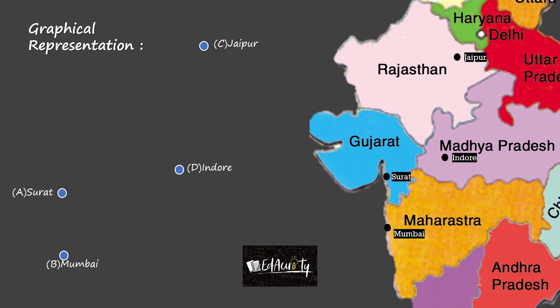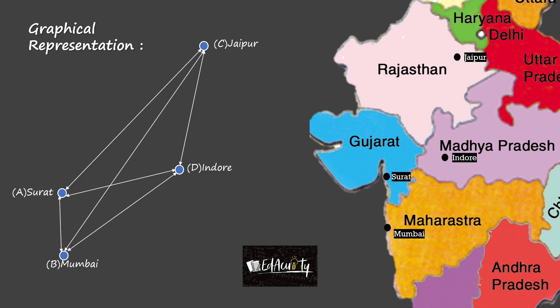On the right-hand side, you can see the positions of the four cities — Surat, Mumbai, Jaipur, and Indore — corresponding to their locations on the map of India. Besides this is the graphical representation of these cities, which are shown as the vertices of the graph, denoted as A, B, C, and D respectively, and the edges between them represent that there is a route between the respective cities.